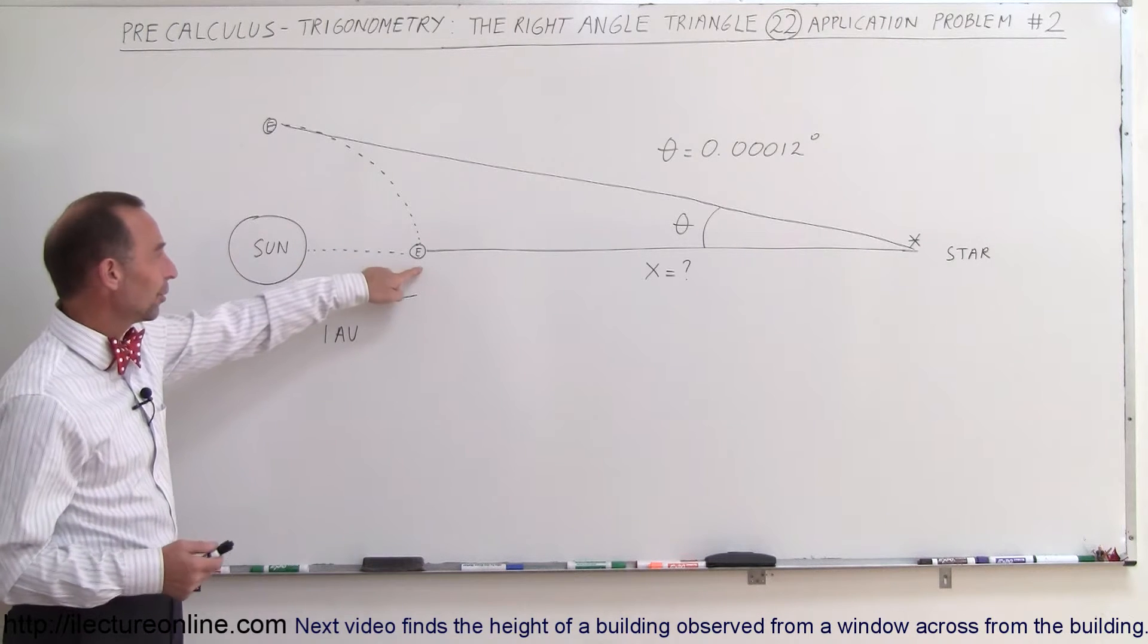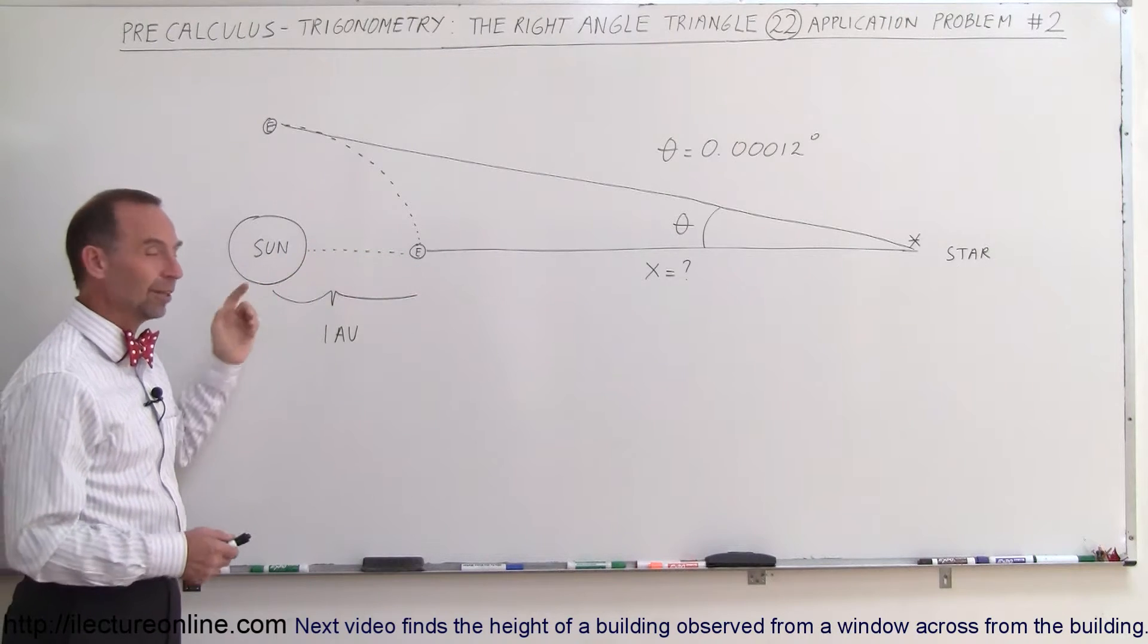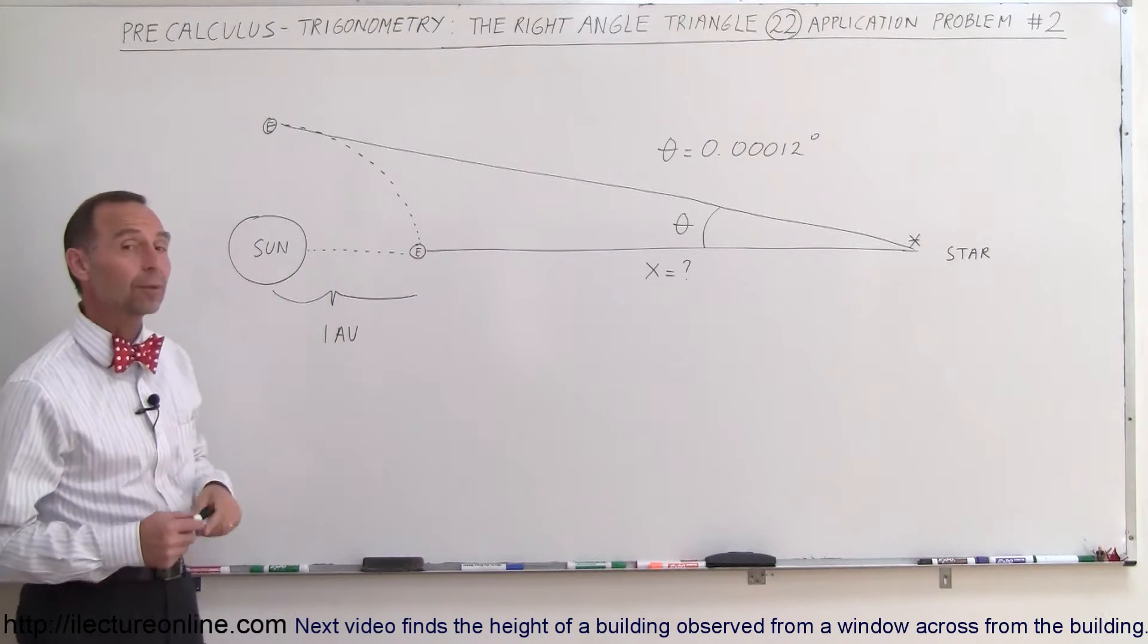Let's say here we have the Sun, and here's the Earth, and the Earth goes around the Sun. The distance between the Earth and the Sun, about 93 million miles, we call that one astronomical unit.